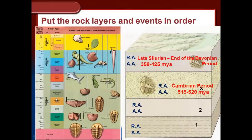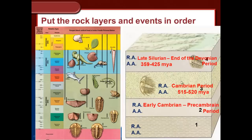Looking at the absolute age, that corresponds to somewhere between 359 to 425 million years ago for this rock layer. Even taking the youngest date of the top layer and the oldest of layer three, there are still millions of years in between when these rock layers were deposited — meaning there may be millions of years of Earth's history not recorded. For the bottom two rock layers, the law of superposition tells us they must be older, but we can't assign an age because there are no fossils in them.